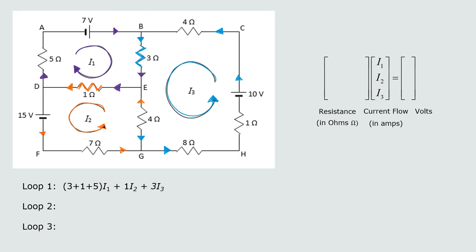Now we determine the voltage in loop 1. Looking at the power source, the current flow is coming out of the positive end — the long bar. So the voltage contribution is positive 7. The complete loop 1 equation is: (3+1+5)I1 + 1·I2 + 3·I3 = 7.